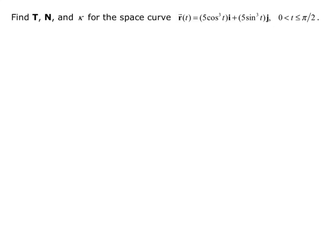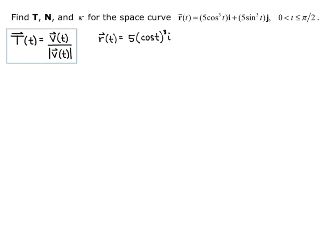They give us the restriction that t is between 0 and pi over 2. That will not factor into our calculation — it just tells us what our domain restriction is. So our unit tangent vector is velocity over the magnitude of velocity, so we want to find those pieces first. I'm going to rewrite R of t, my position vector,